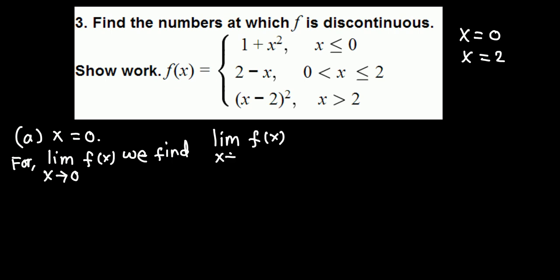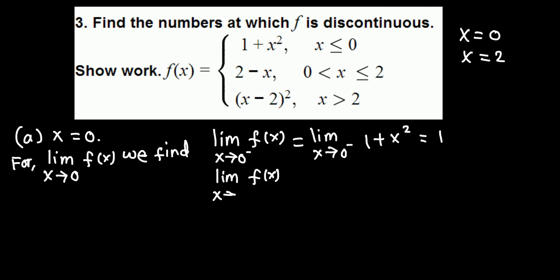The limit of f(x) as x approaches 0 from the left uses the first piece, 1 plus x squared. Plugging in x equals 0 gives 1 plus 0 squared, which equals 1. So the left-hand limit is 1. For the right-hand limit as x approaches 0 from the right, we use the second piece, 2 minus x. Plugging in x equals 0 gives 2 minus 0, which equals 2.